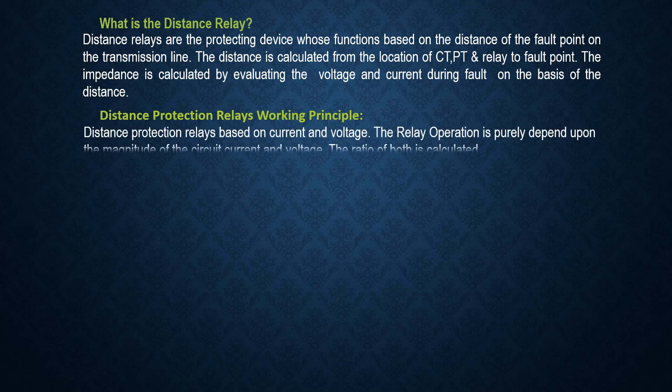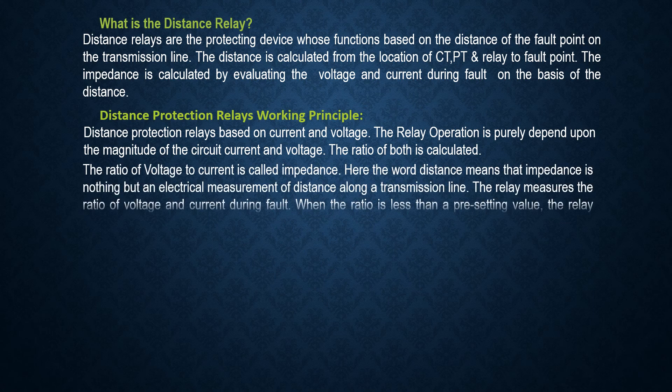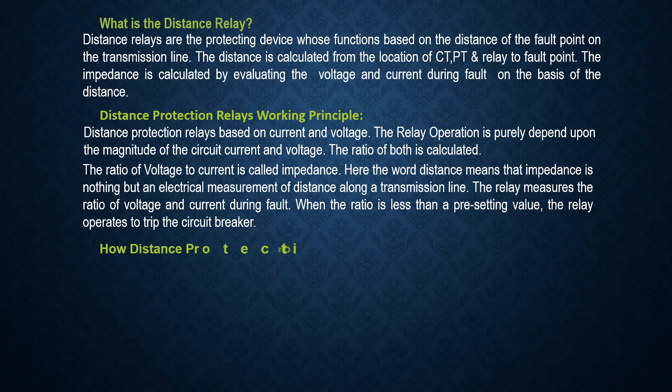Distance protection relays are based on current and voltage. The relay operation purely depends upon the magnitude of the circuit current and voltage — the ratio of both is calculated. The ratio of voltage to current is called impedance. The relay measures the ratio of voltage and current during a fault; when the ratio is less than a preset value, the relay operates to trip the circuit breaker.